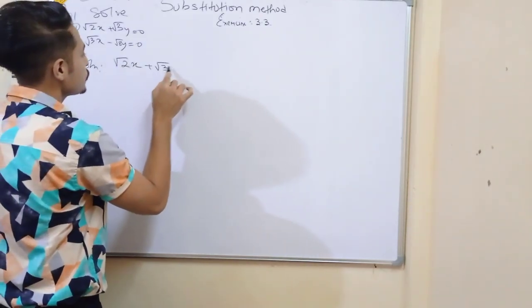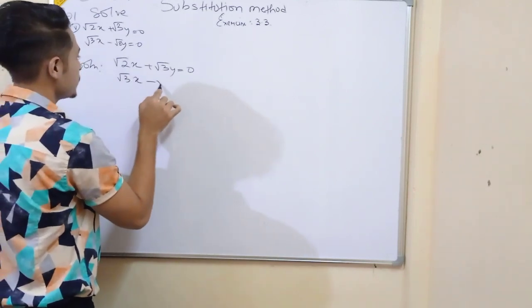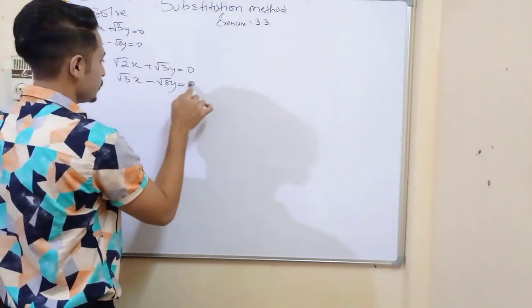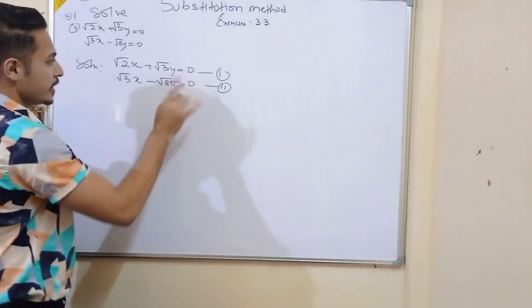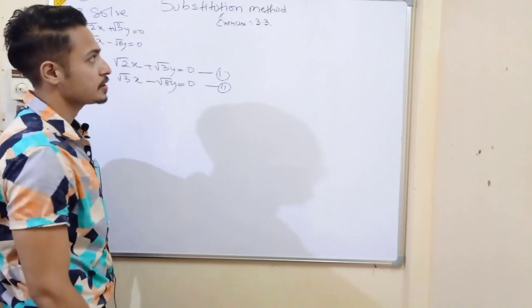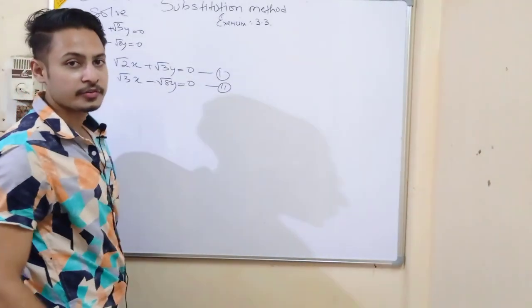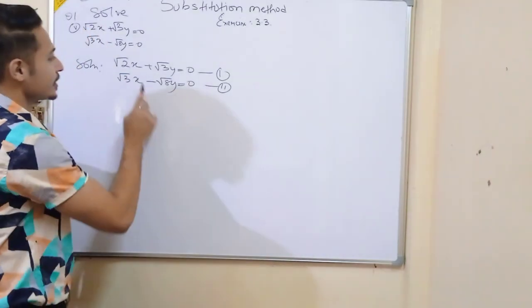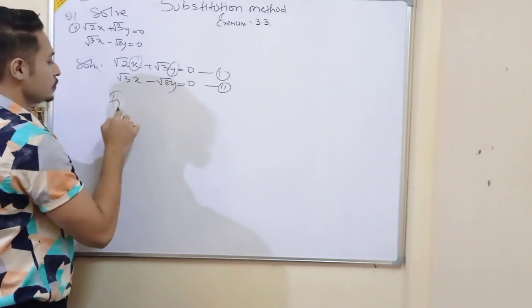If I write the equation, root 2x plus root 3y is equal to 0, and root 3x minus root 8y is equal to 0. So, this is our first equation. This is the second equation now. To follow the substitution method, we take any one equation and find the variable value.